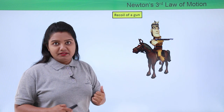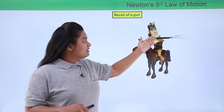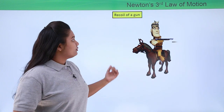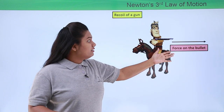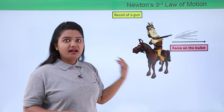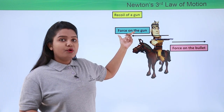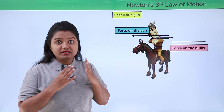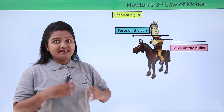Now why does this happen? This is where the third law of motion comes into picture. The gun exerts a force onto the bullet in the forward direction, because of which the bullet starts moving with a great speed. But in return, the bullet also exerts an equal and opposite force onto the gun, which is in the opposite direction. These two forces are equal in magnitude and opposite in direction, as stated in Newton's third law — to every action there is an equal and opposite reaction.